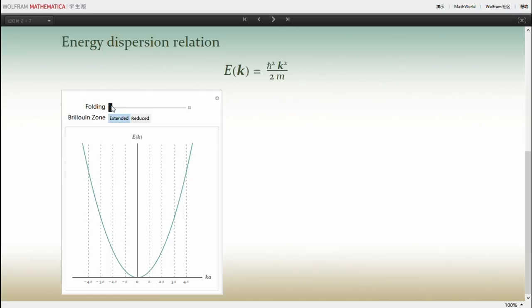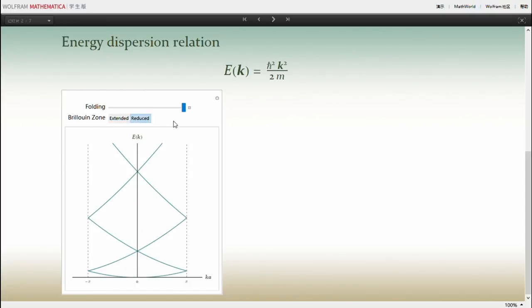And we usually fold the parabola into the first Brillouin zone, and this is the reduced Brillouin zone. In this figure we can see that the first band is at the bottom of the parabola, and the second band, third band, fourth, and so on.